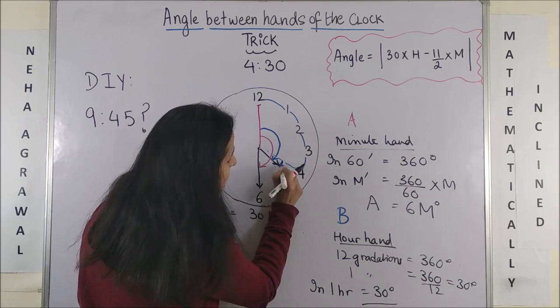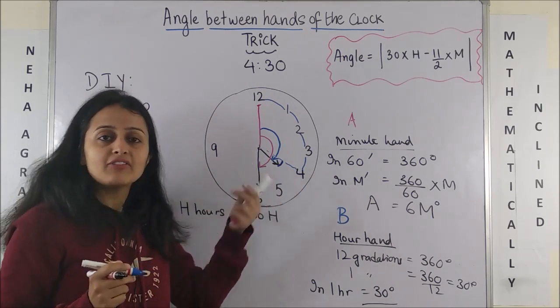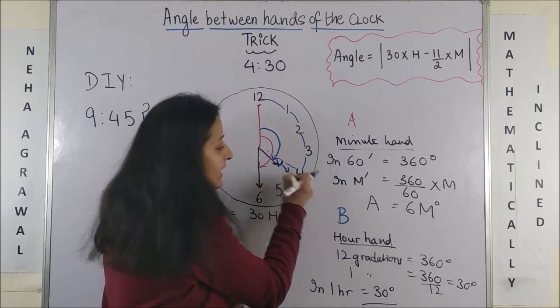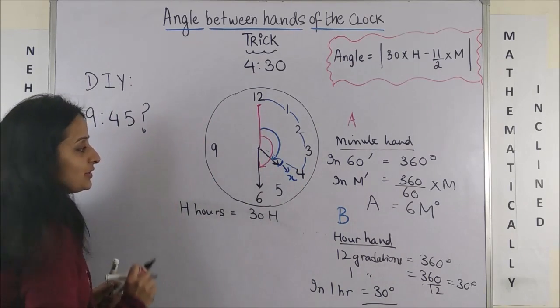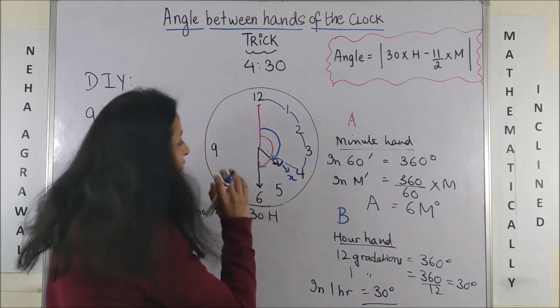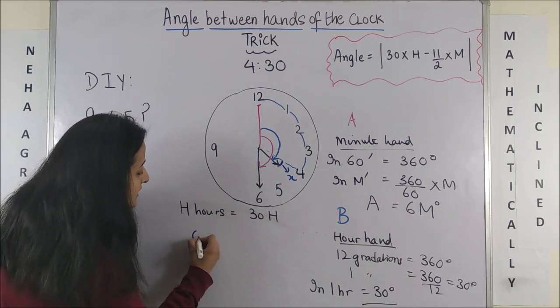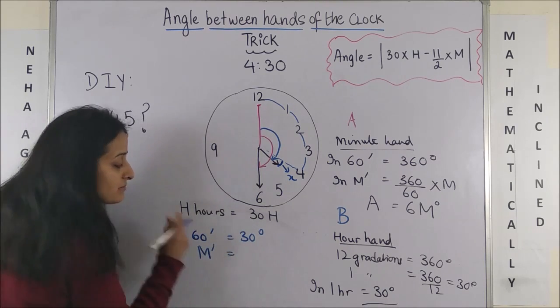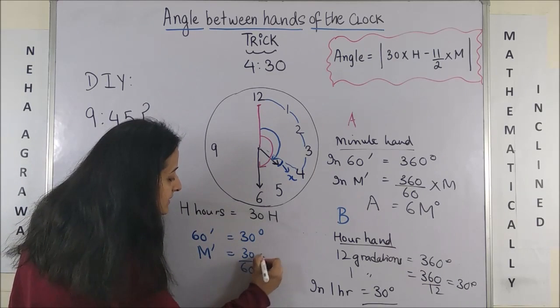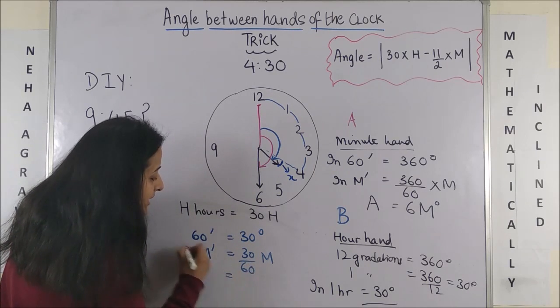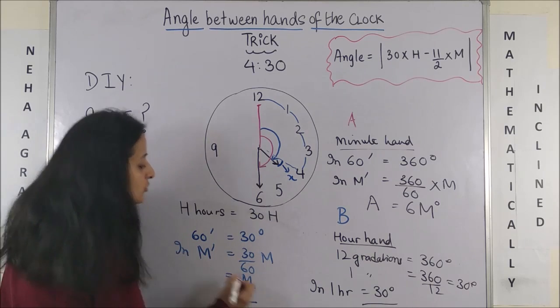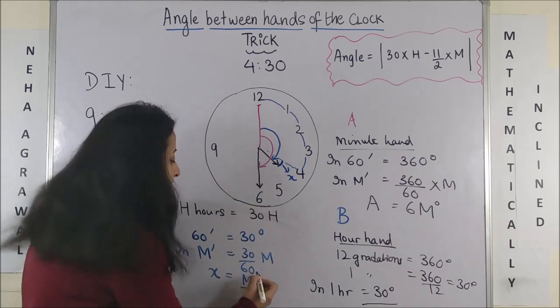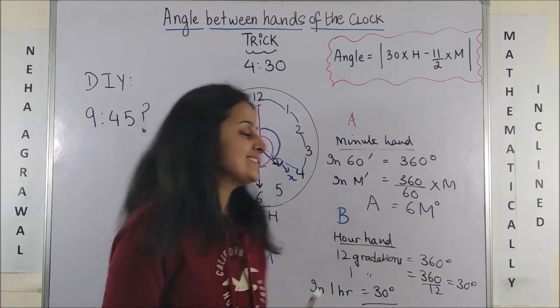But at the same time, there's this tiny little gap which has created because the hour hand moves slightly ahead when the time is 4:30. Now, if you say x, this is a matter of few minutes. So what's going on? We know in 60 minutes, it's covering 30 degrees. So in certain M minutes, my hour hand is moving 30 by 60 into M. So that means here I can say M by 2. So my x, this tiny little angle is actually moving M by 2 degrees.